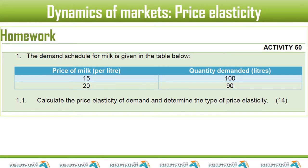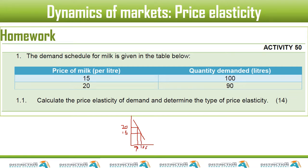The homework said: the demand schedule for milk is given in the table below. We have the price of milk and the quantity demanded at different points. To understand it, you might want to draw a demand curve — one that is downward sloping. We have milk at a price of 20 and at a price of 15, with quantities of 90 and 100 respectively.